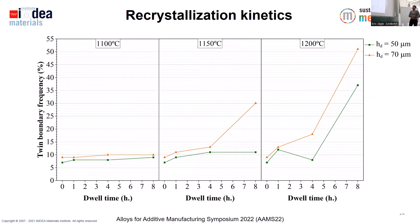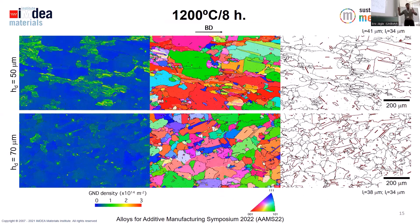At 1100°C we have basically no evolution, even after eight hours. At 1150°C, the 70 micron microstructure has evolved quite significantly even after four hours. It is only at 1200°C that we see a very clear amount of recrystallization in both cases. In the final state, both conditions show large fractions of recrystallized grains with twin boundaries throughout, and the grain size is larger than in the initial microstructure. In both cases we now have essentially equiaxed grains — the microstructure has evolved significantly.